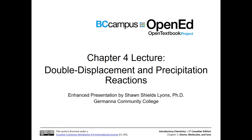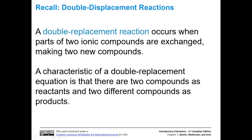Let's remind ourselves about double displacement reactions. A double displacement reaction occurs when you take two ionic compounds, switch partners - you switch the cation on one with the anion on the other - and then do the same with the other compound, giving you two new ionic compounds as products. One characteristic is that you have two compounds as reactants and two different compounds as products.